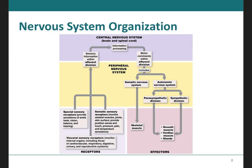Here we have a map of the nervous system organization. There are three different types of receptors: visceral sensory receptors, special sensory receptors, and somatic sensory receptors. The visceral receptors monitor internal organs — the cardiovascular, respiratory, digestive, urinary, and reproductive systems. The special senses include smell, taste, vision, balance, and hearing. Somatic receptors — remember, somatic means skeletal muscle — also monitor joints and skin surface and provide sensation of pain and temperature. All these receptors are located in the peripheral nervous system.